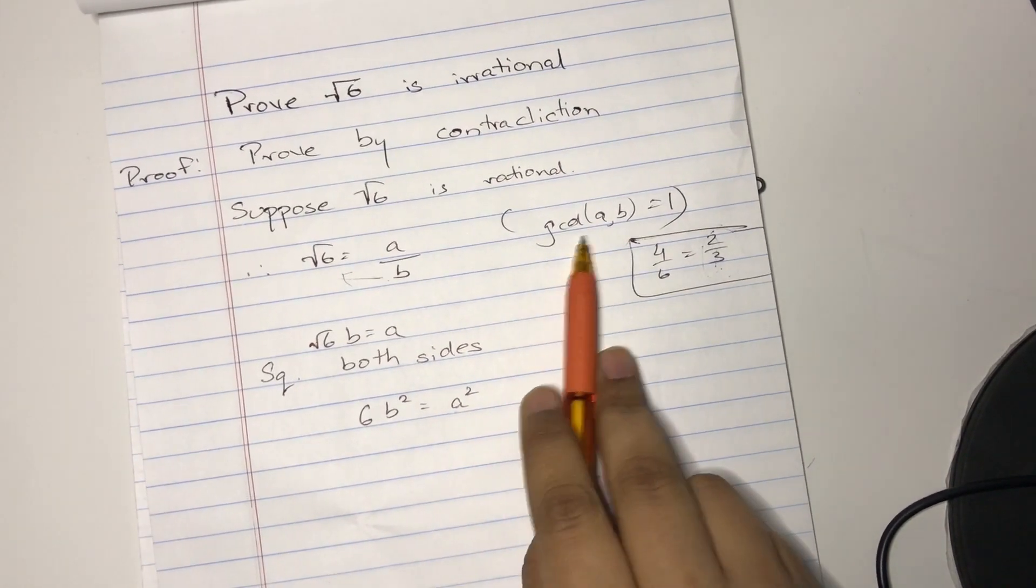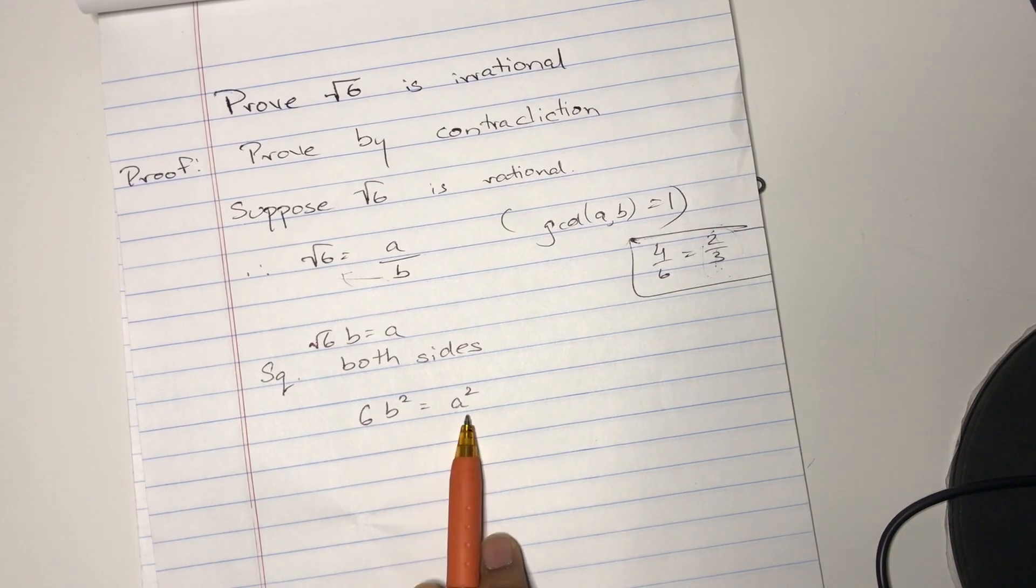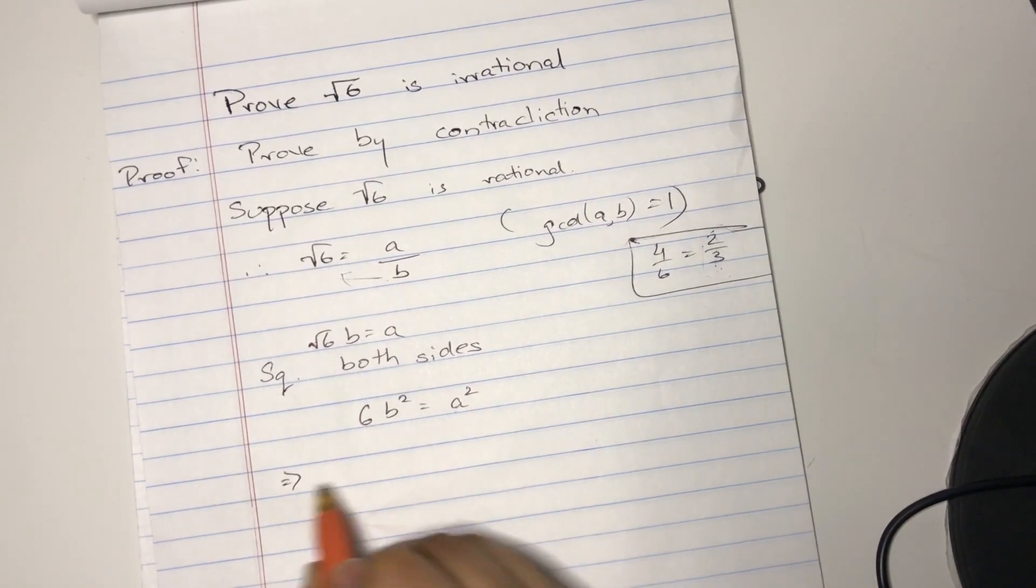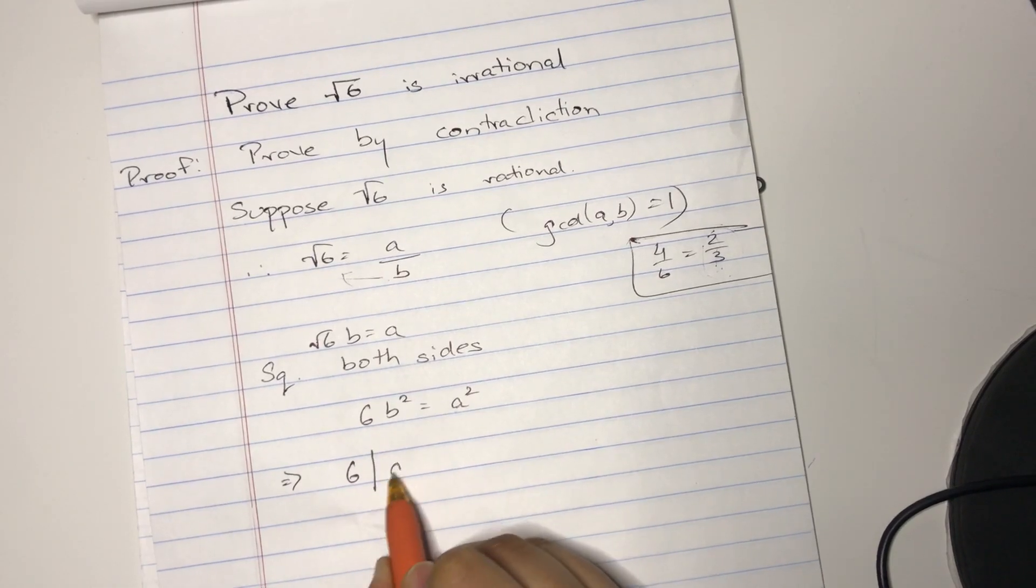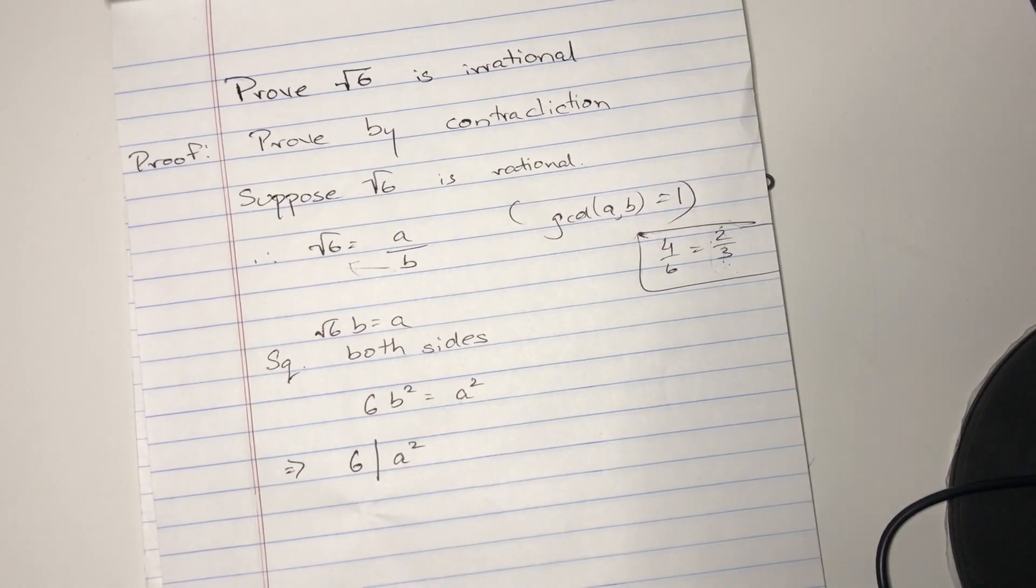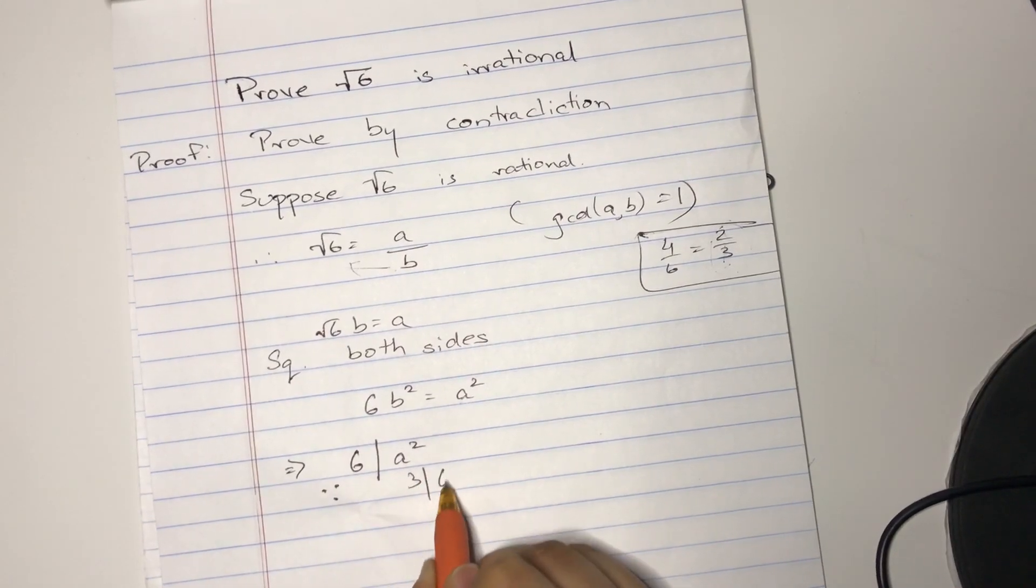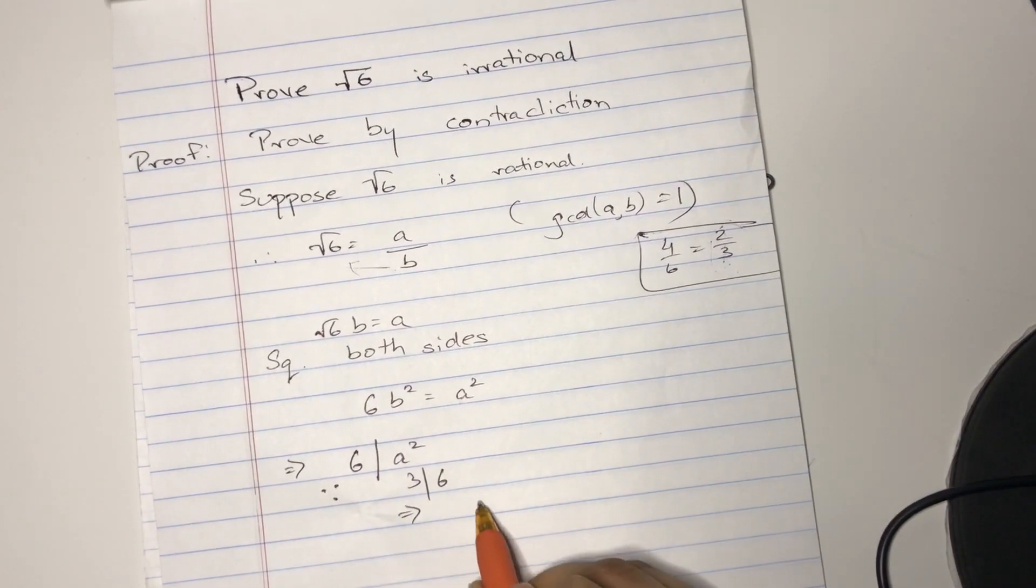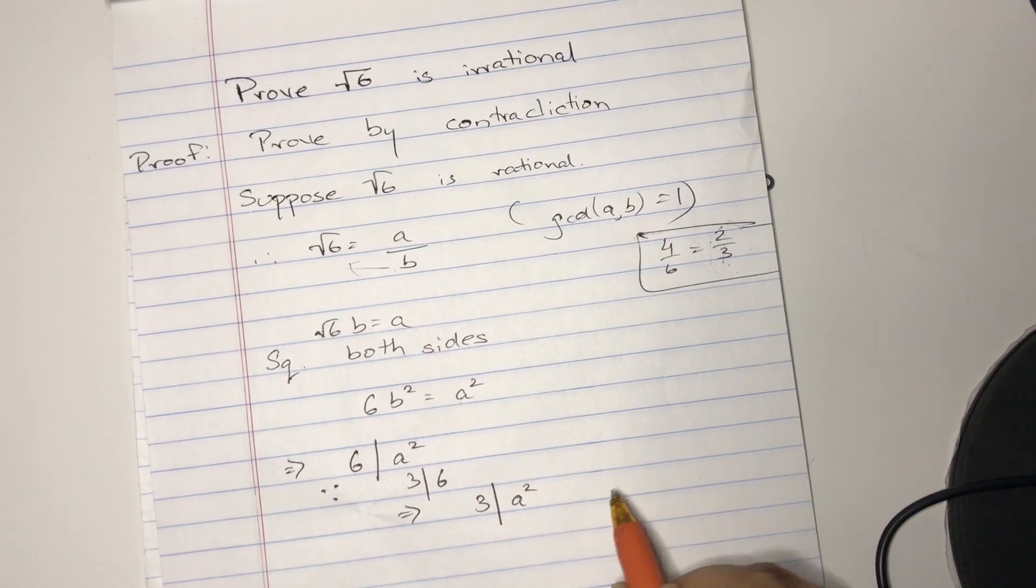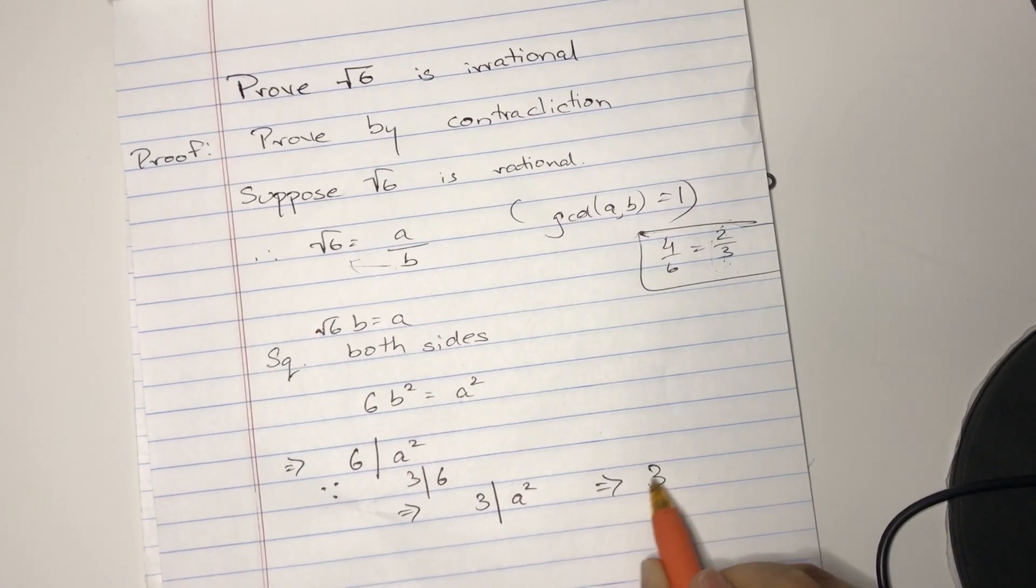Now we had GCD of A and B equals 1. So B² does not divide A², and B does not divide A. So we have 6 divides A². And since 3 divides 6, we get 3 divides A², and effectively, 3 divides A.